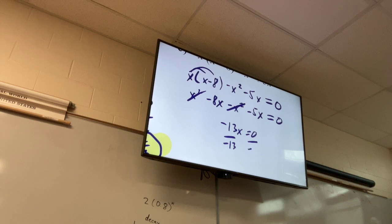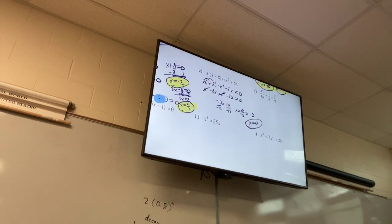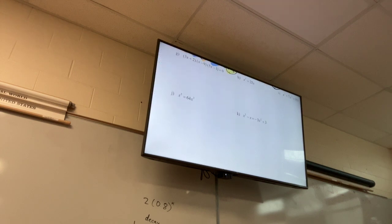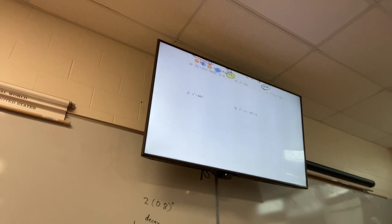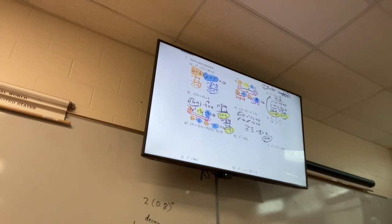I divide by negative 13 and get x equals zero over negative 13, which equals zero. So sometimes when you multiply everything out and get everything on one side, it's not even a factorable problem.